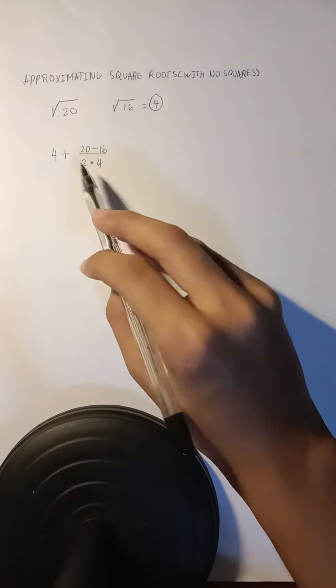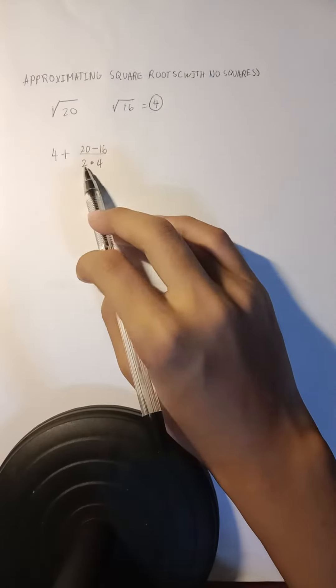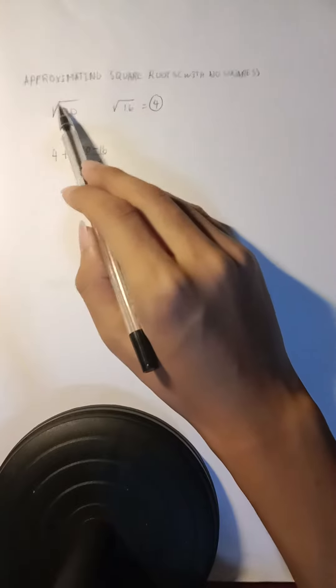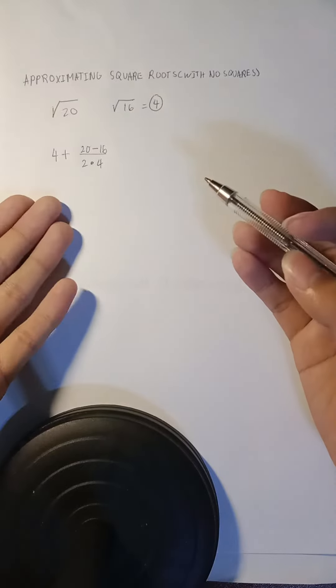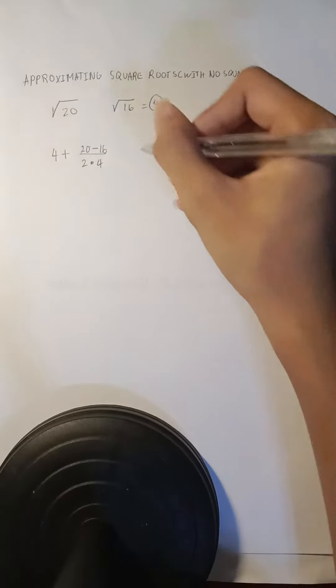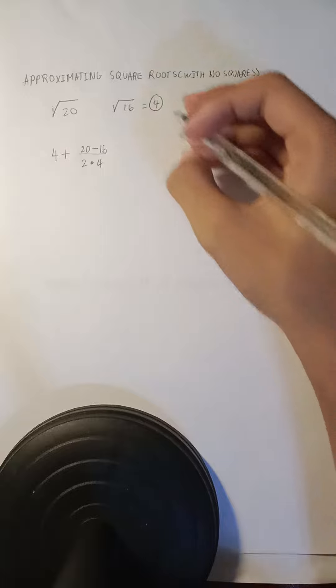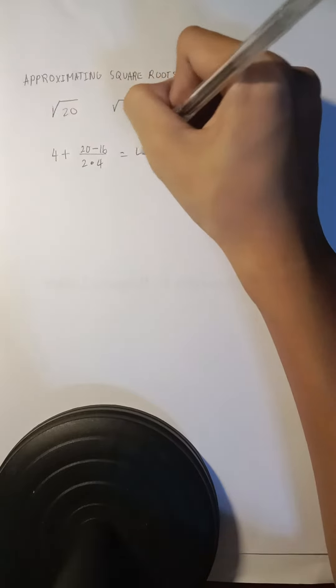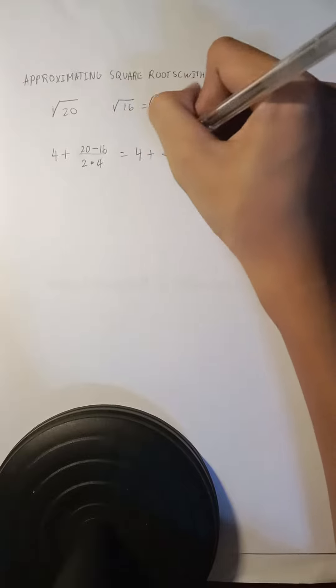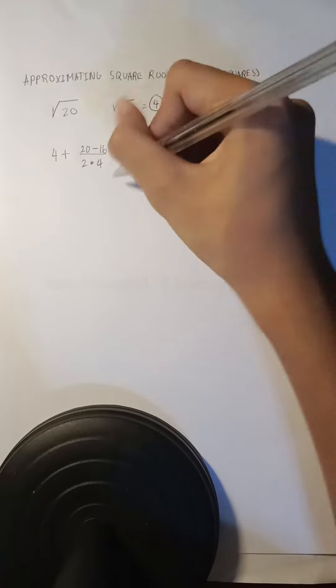We use 2 because there's always a 2 in the square root. Now we have this, right? So just calculate, which will turn to this: 4 plus 4 over 8.